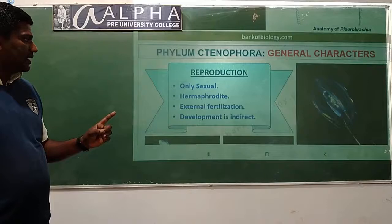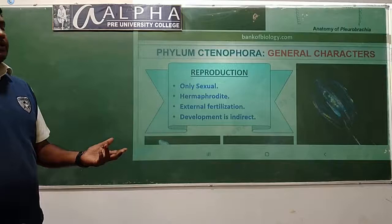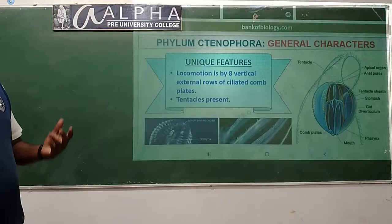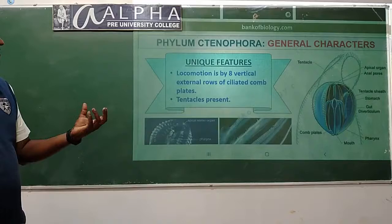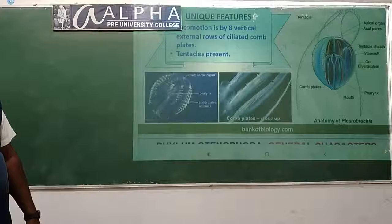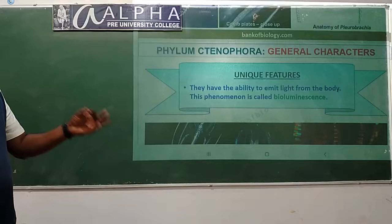Reproduction: they reproduce only by sexual method. They are hermaphroditic - both male and female sex organs are present in the same individual. External fertilization where male and female gametes fuse in an external media, that is water. Development is indirect, containing a larval stage. Unique feature: locomotion is by eight vertical external rows of ciliated comb plates. Tentacles are also present.